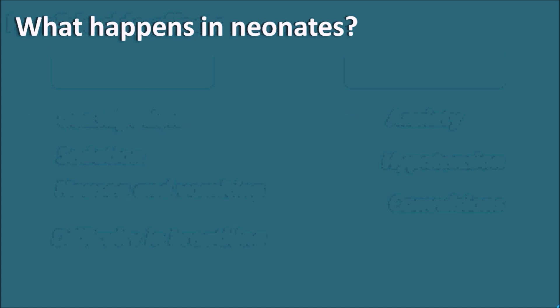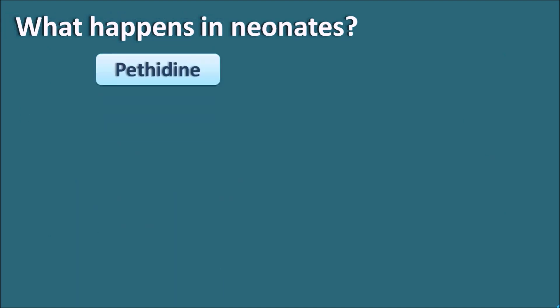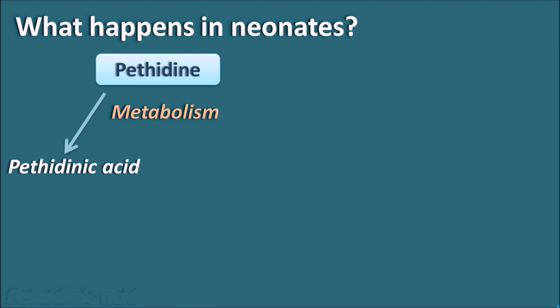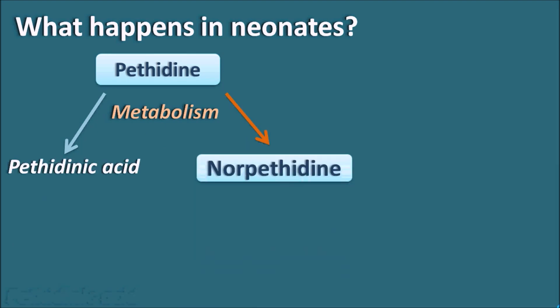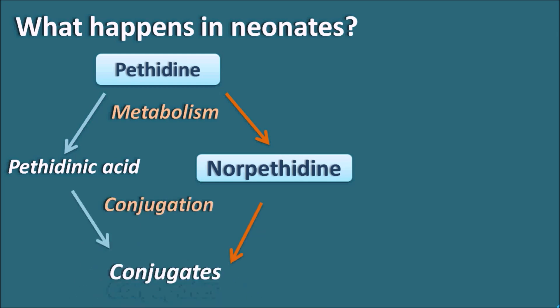Pethidine undergoes metabolism producing two metabolites: Pethidinic acid and Nor-Pethidine. Pethidinic acid is inactive but Nor-Pethidine is active. Both can undergo conjugation and are then excreted in the urine. Most of the Pethidine is converted into Pethidinic acid and some into Nor-Pethidine; these metabolites are conjugated and excreted in the urine.